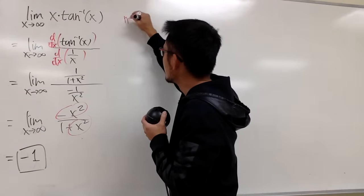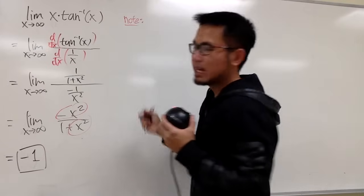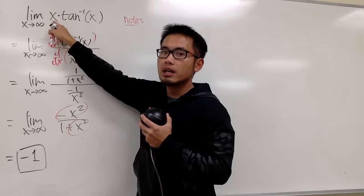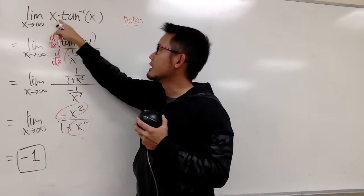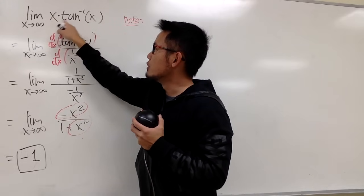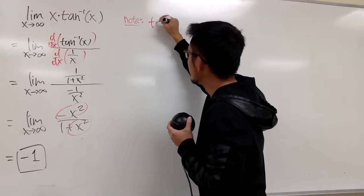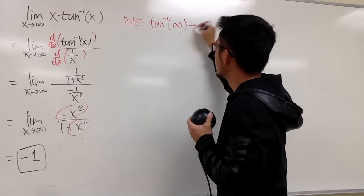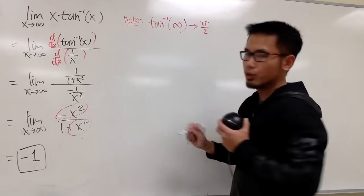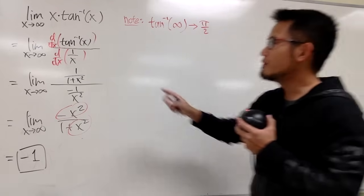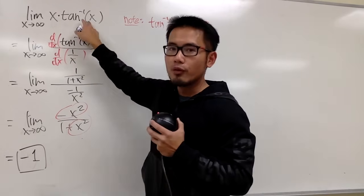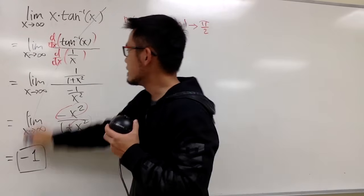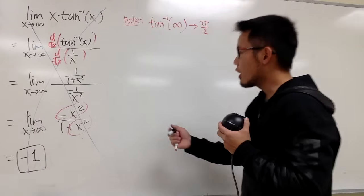Here is a note. If you plug infinity into x, we have infinity. But the inverse tangent of infinity — this right here — goes to pi over 2. So in fact, we have an infinity times pi over 2 situation. This is not a 0/0 or ∞/∞ form, so the previous work is not correct at all.